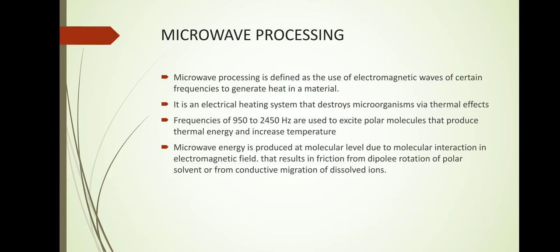What is microwave processing? Microwave processing is defined as the use of electromagnetic waves of certain frequency to generate heat in a material, thereby occurring cooking. It is an electrical heating system that destroys microorganisms via thermal effect. The foods are cooked by exposing them to electromagnetic radiation in the microwave frequency range. This induces polar molecules in the food to rotate and produce thermal energy. Frequencies of about 950 to 2450 MHz are used to excite polar molecules that produce thermal energy and thereby increase temperature. Microwave energy is produced at the molecular level due to molecular interaction in an electromagnetic field, resulting from dipole rotation of polar solvents or from conductive migration of dissolved ions.